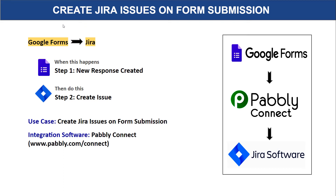Hello everyone. In this video we will learn how to create Jira issues on new form submission. Imagine you have generated a new response in Google Forms and you want to create an issue in Jira software. You have two choices: either copy all the responses from Google Forms, sort them out and manually create an issue in Jira — which is repetitive and tiresome — or you can bring in some automation, so that when a new response is created in Google Forms, it will automatically create an issue in Jira.